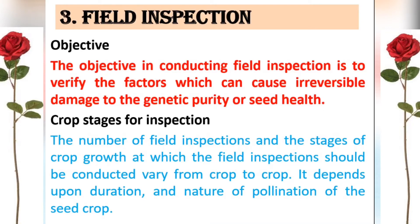The first field inspection must be done before flowering and is the most important. During this inspection, the officer completes Phase 2 (verification of seed source), checks the isolation distance maintained, confirms the area matches what was declared in the application, and checks for off-types. The inspector also guides the seed producer on roguing, identifying off-types, and removing pollen shedders.